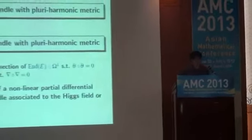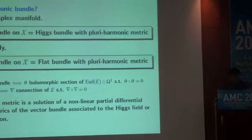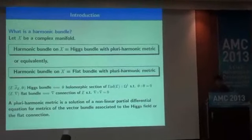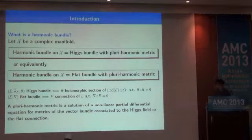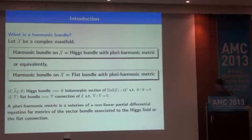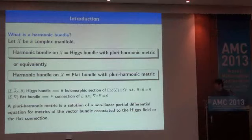Let me begin with: what is a harmonic bundle? A harmonic bundle is some object on complex manifolds. Very briefly, a harmonic bundle is a Higgs bundle with a pluri-harmonic metric, or equivalently, it is a flat bundle with a pluri-harmonic metric. A Higgs bundle is a holomorphic vector bundle on complex manifolds with a Higgs field, which is a holomorphic section of End(V) of type (1,0), whose wedge product is 0 — an endomorphism-valued harmonic bundle form which is 0.